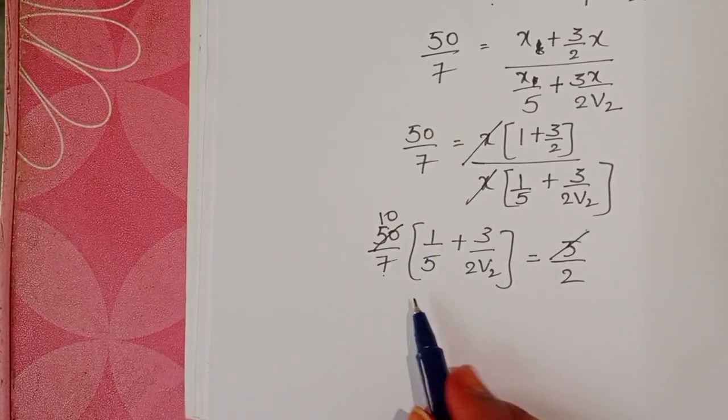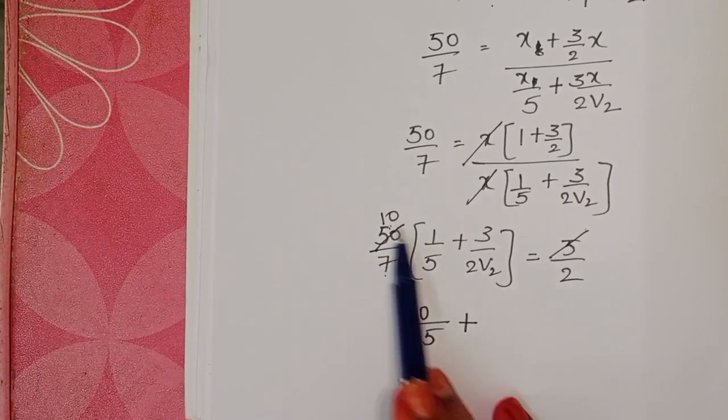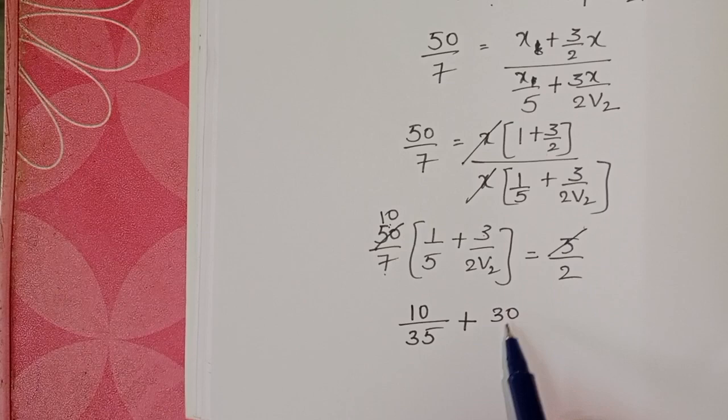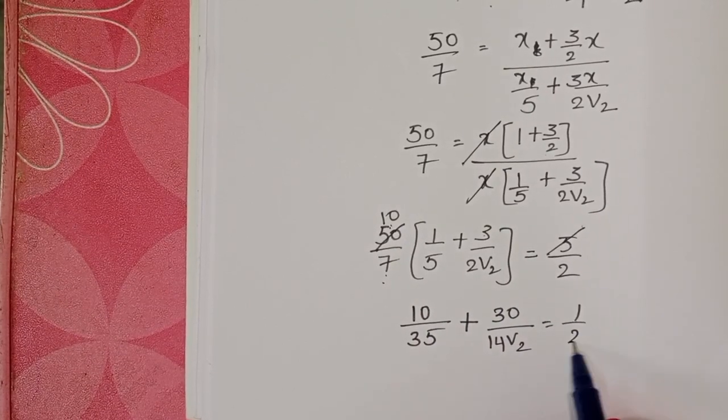10 by 7 into 1 by 5 becomes 10 by 35 plus 10 into 3, 30 by 7 into 2v2. 14v2 equals 1 by 2.